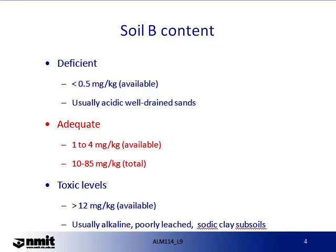Boron exists either as neutral or negatively charged molecules in the soil. When it is at a concentration of less than 0.5 mg per kg available, it is regarded as deficient, usually found in acidic well-drained sands. When it ranges from 1 to 4 mg per kg available, it is considered adequate. Boron can reach toxic levels at 12 mg per kg available or more, usually in alkaline, poorly leached, sodic clay subsoils.